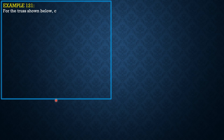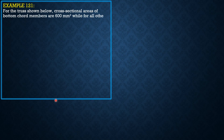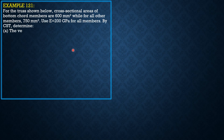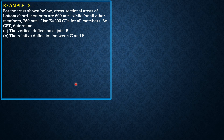For the truss shown below, cross-sectional areas of bottom chord members are 600 mm², while for all other members, 750 mm². Use modulus of elasticity of 200 gigapascals for all members. By Castigliano's second theorem, determine the vertical deflection at joint B and the relative deflection between C and F.